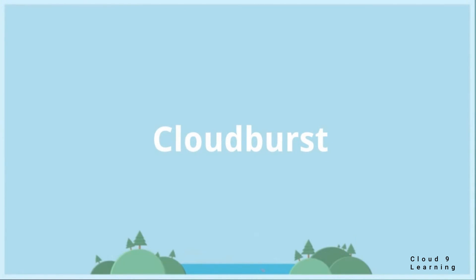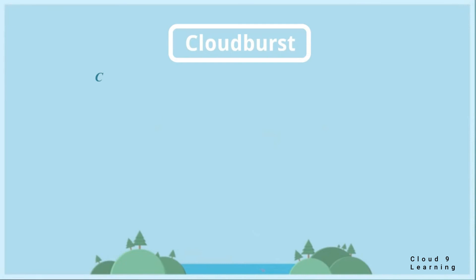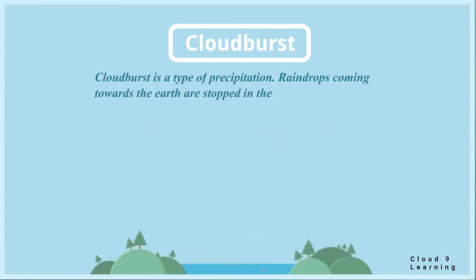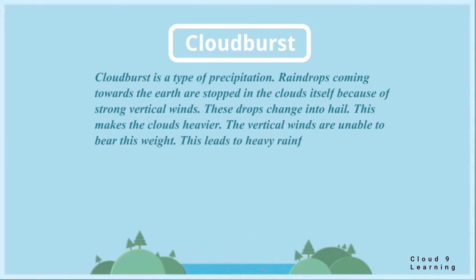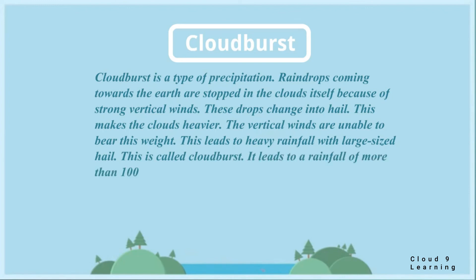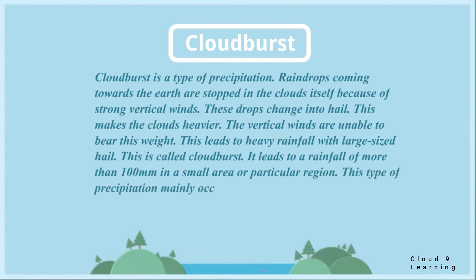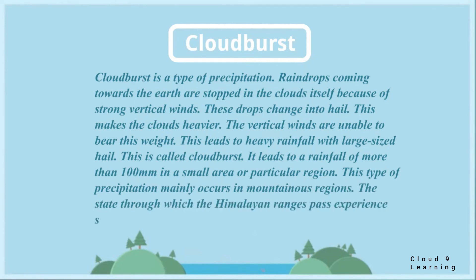Cloudburst is a type of precipitation. Raindrops coming towards the earth are stopped in the clouds because of strong vertical winds and change into hail, making the clouds heavier. The vertical winds are unable to bear their weight, leading to heavy rain with large-sized hail — this is called a cloudburst. It results in rainfall of more than 100 mm in a small area or particular region, mainly occurring in mountainous regions. The states through which the Himalayan ranges pass experience such rainfall.